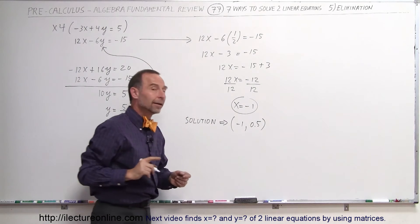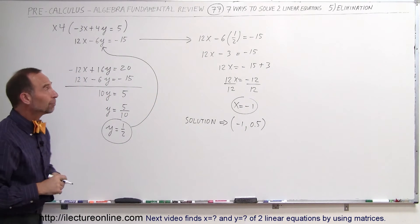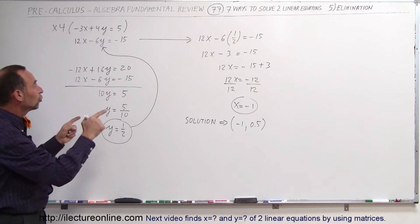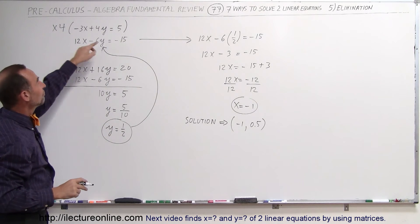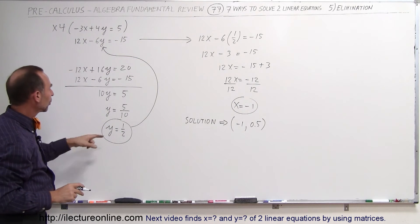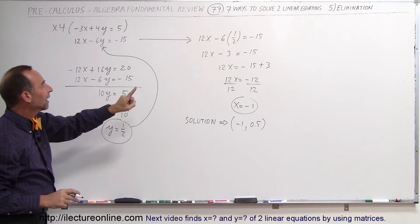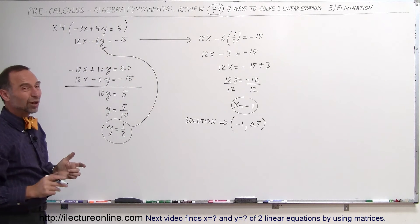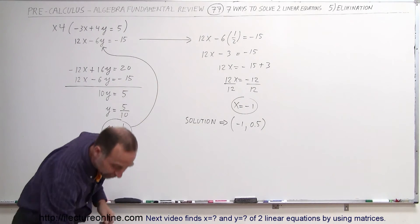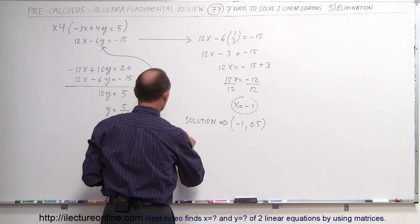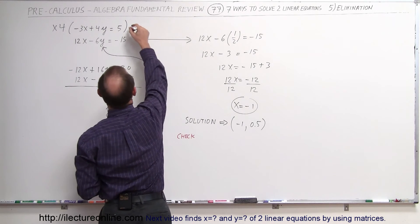Now, how do we know we did the problem correctly? There's a way to check. What if I plug those two values in the first equation, the one that I didn't work with, to find the value for x? So I'm going to plug in y equals 1 half, and x equals negative 1 into my first equation to check to see if I did the problem correctly. Let me use a different color. So now we're going to check the problem.